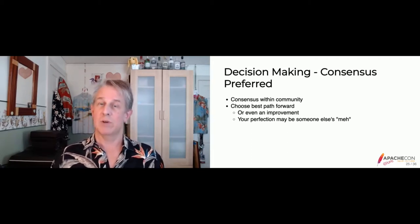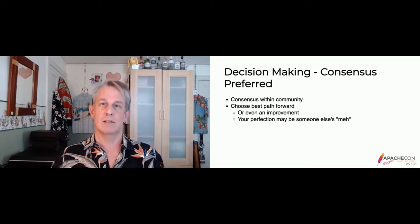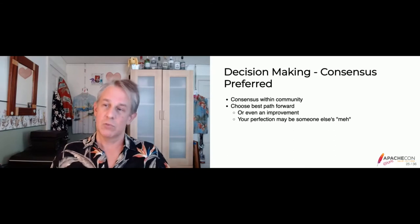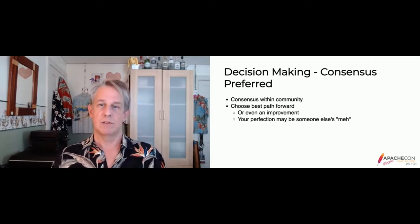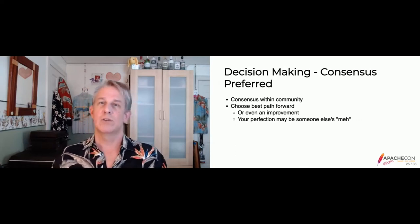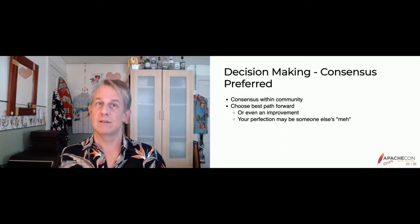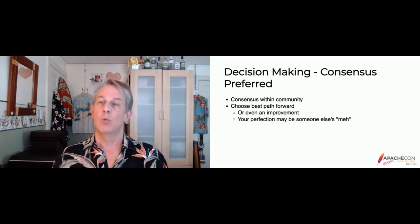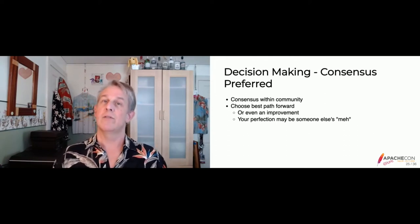A formal thing we have at Apache projects is lazy consensus, where someone will announce, "I'm going to do this unless someone objects." Usually nobody says anything, or somebody says maybe you should add something, and then that person can move forward and the whole project moves forward. But sometimes we do need votes. One way is voting as an official consensus — when a project management committee makes a formal release on behalf of the ASF, we have the PMC formally vote to release it.